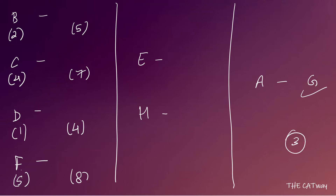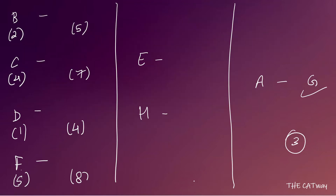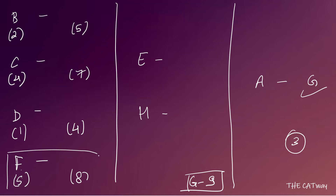For G to win the tournament, G must score at least three goals in the finals. So G can score a maximum of nine goals up to and including the semi-final. This gives us a constraint on how G's goals are distributed across the rounds. Now let's work out which team plays against which.